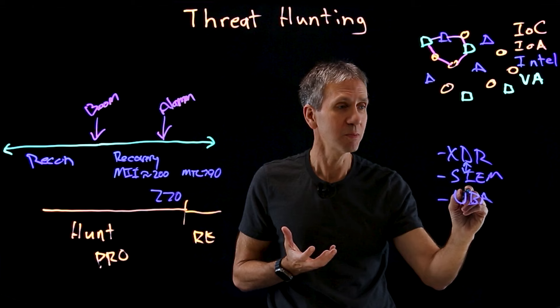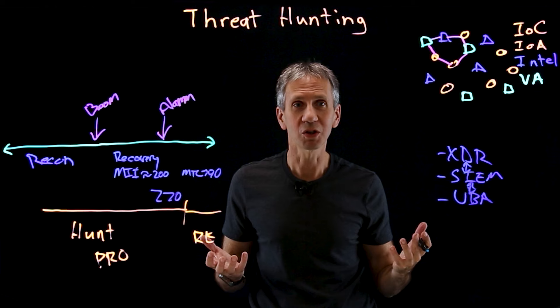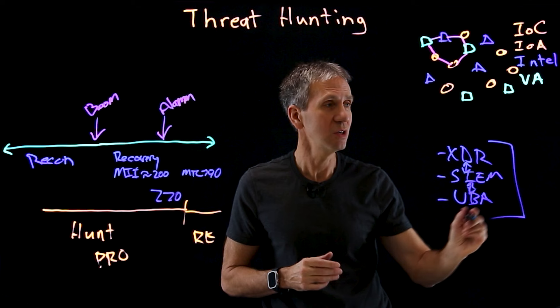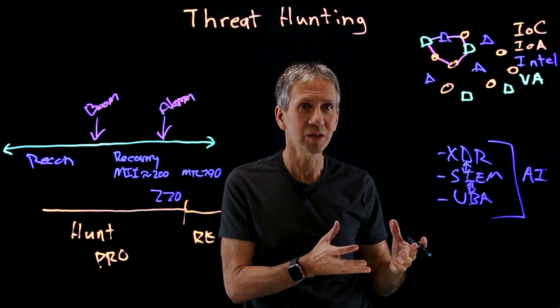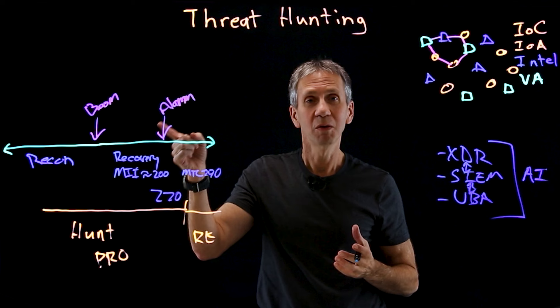Another related technology is user behavior analytics — UBA — which looks for anomalous user activities. Here's a user performing differently than their peer group, and therefore drawing suspicion. Ultimately we want to take all of those technologies and infuse them with artificial intelligence, so we can find the source faster, get to our investigation sooner, and do the reporting — hopefully uncovering the issue before the boom, or at least very soon after.